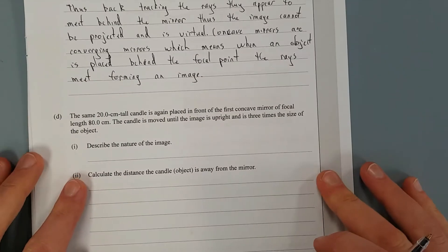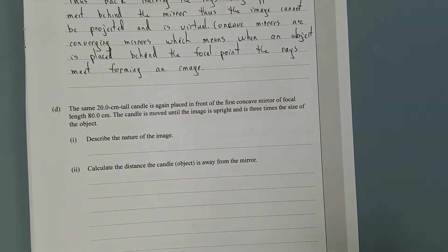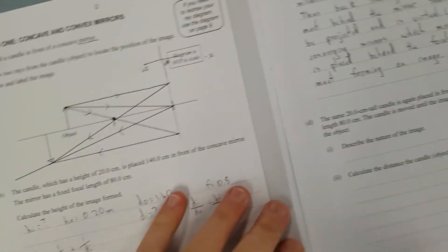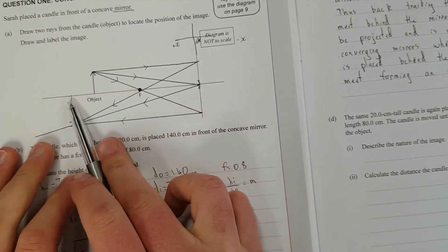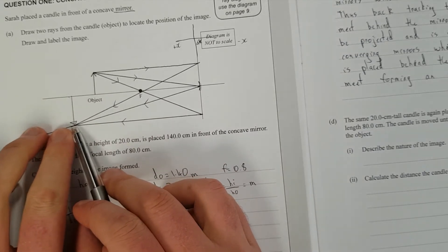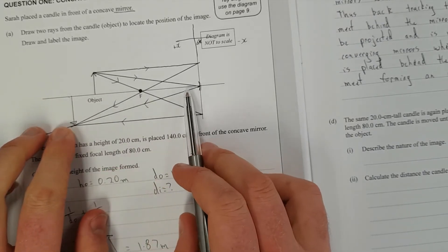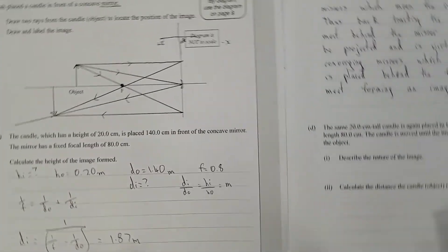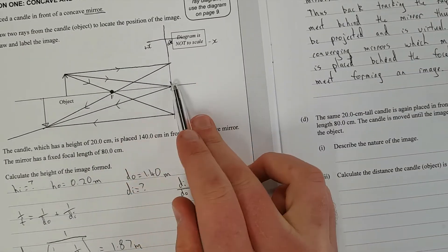The same 20 centimeter tall candle is again placed in front of the first concave mirror of focal point 80 centimeters. The candle is moved until the image is upright and three times the size of the object. Describe the nature of the image. So like I said just before, if you're behind the focal point, you always get inverted. If you're in front of the focal point, you will get an upright image. We already know if it's between here and here, you're going to get an upright and that's going to be virtual.